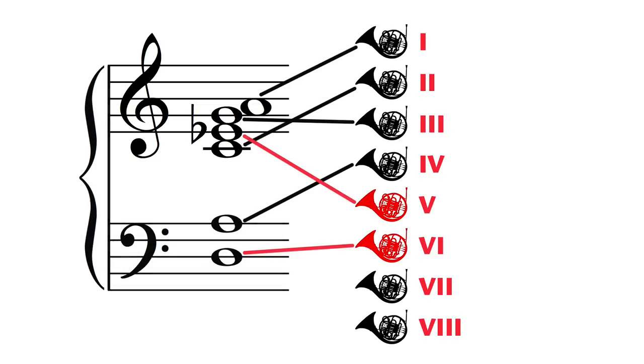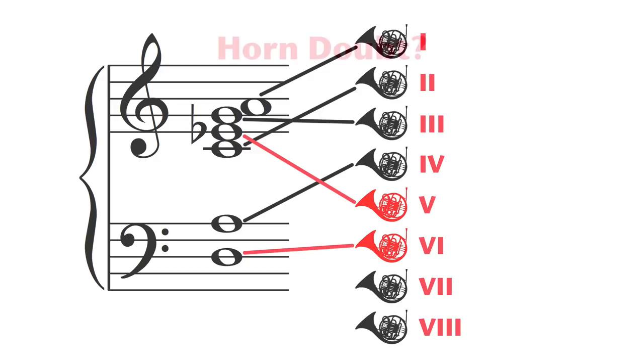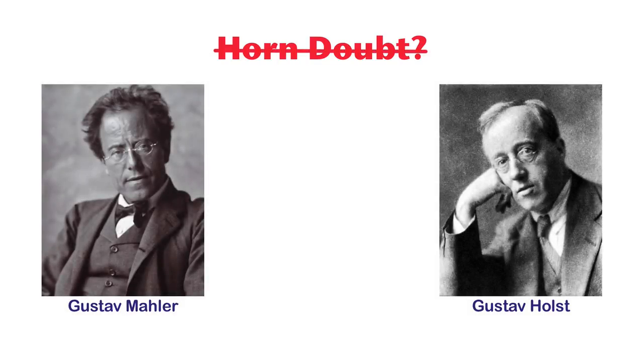If horns one and three are the high horns, and two and four the low horns, then does horn five become the lowest high voice, and six the lowest low voice? When in horn doubt, go to the Gustavs, Mahler or Holst.